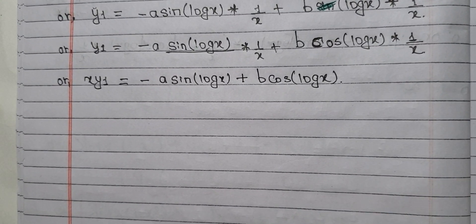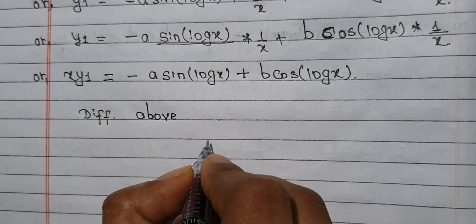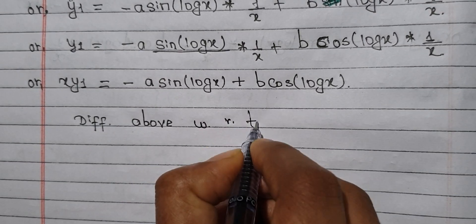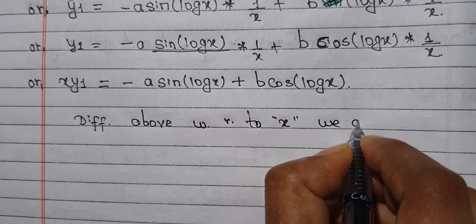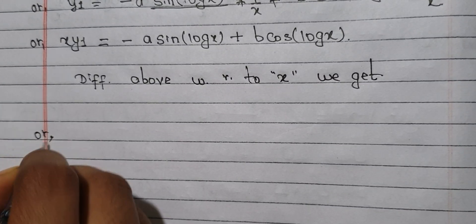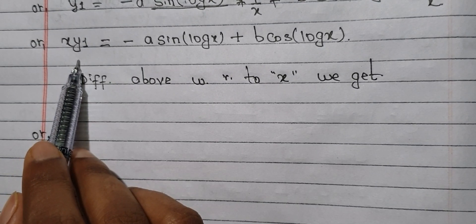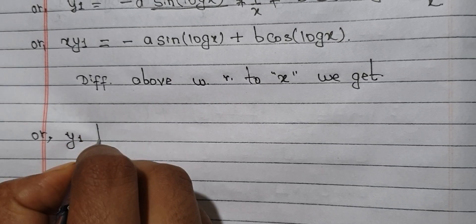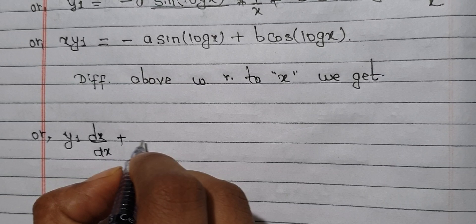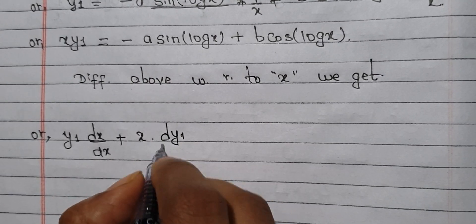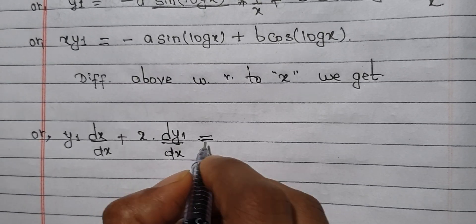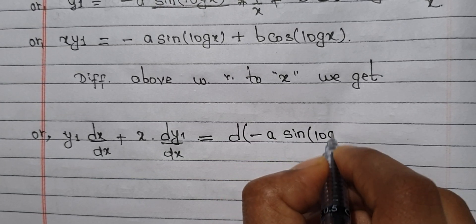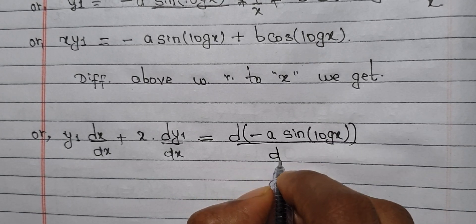Now what we do is differentiate with respect to x. We get: y1 will be constant, dx/dx derivative. So x will be constant, dy1/dx derivative, which equals d(minus a·sin(log x)) / d.